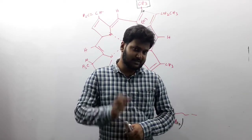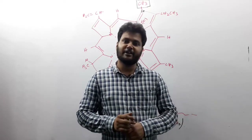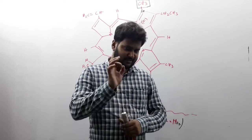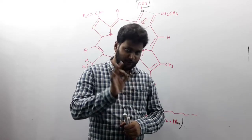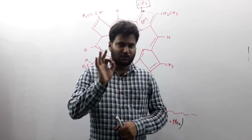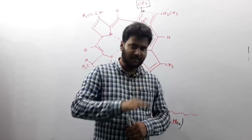Today we will discuss the structures of different types of chlorophylls: chlorophyll A, chlorophyll B, chlorophyll C, chlorophyll D, and bacterial chlorophyll.